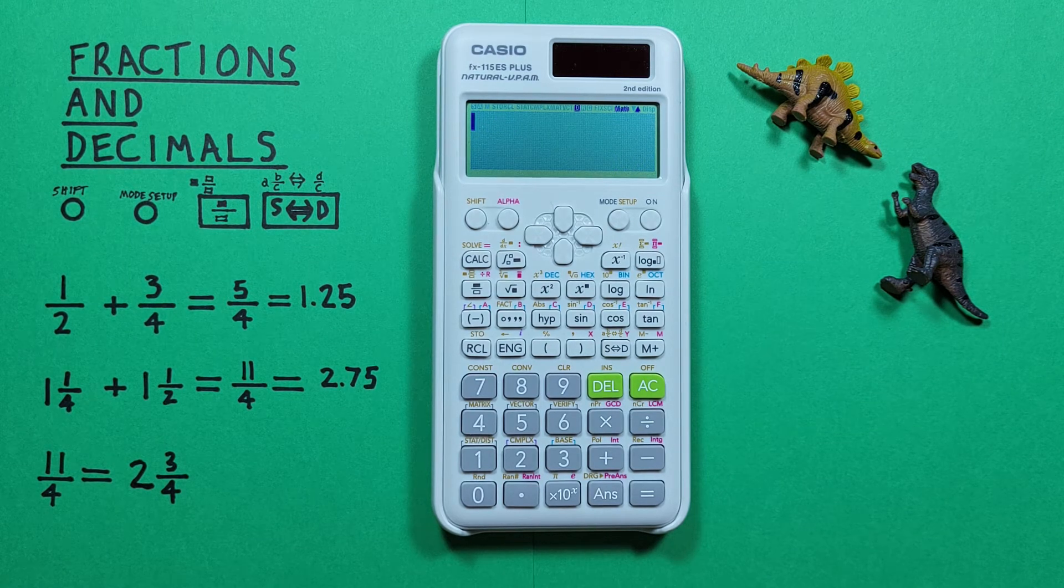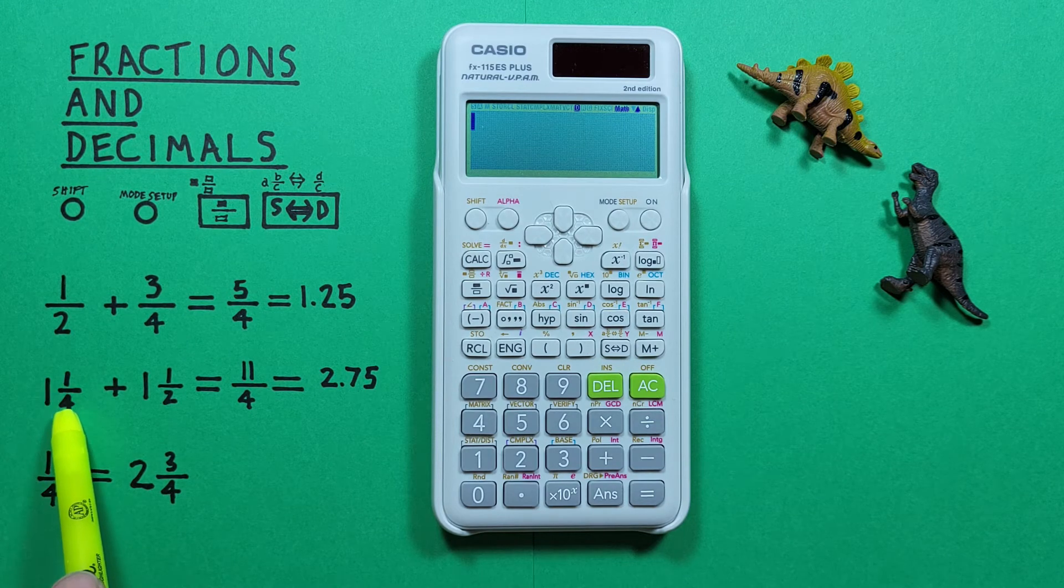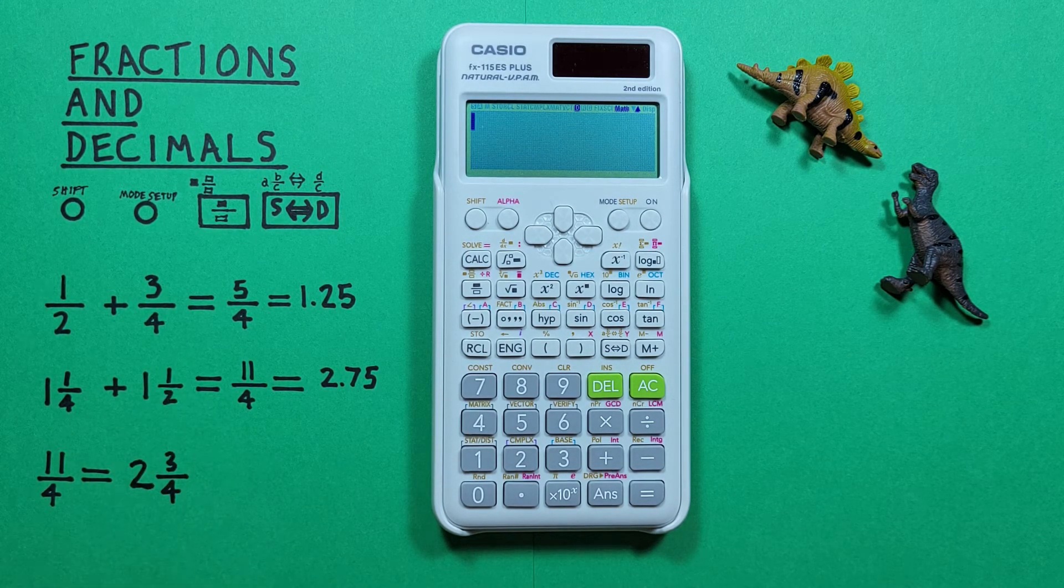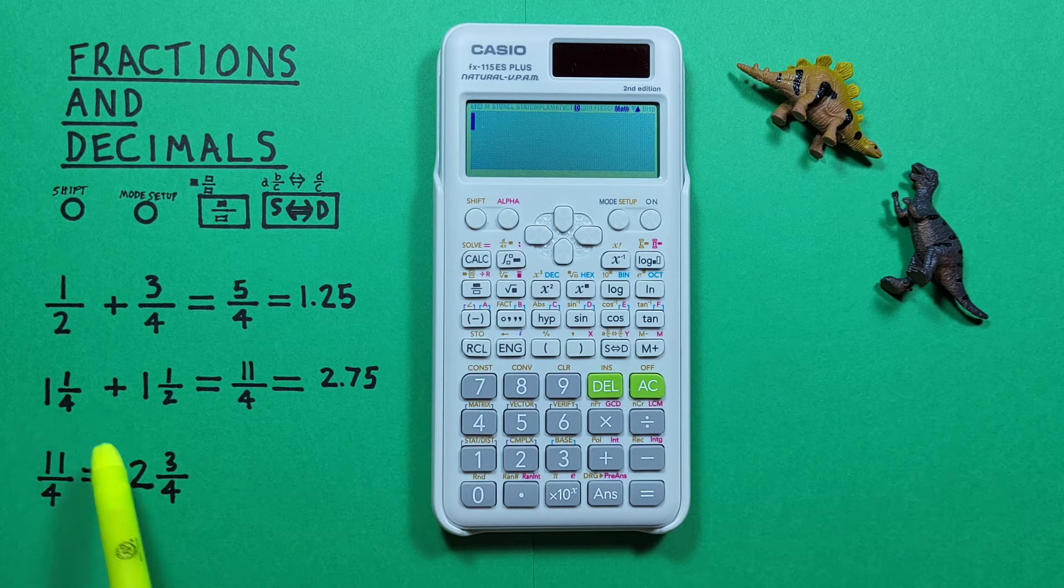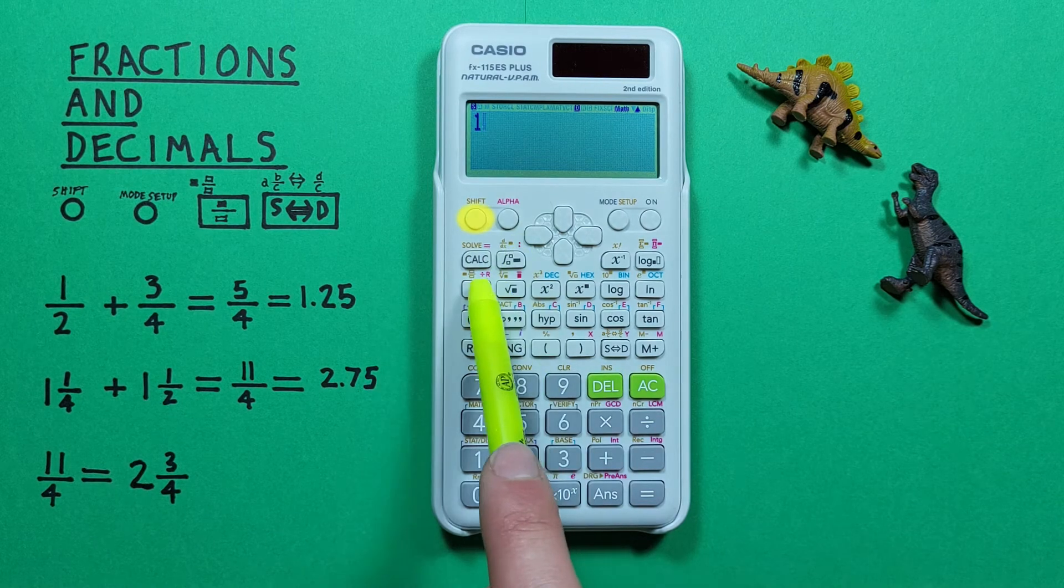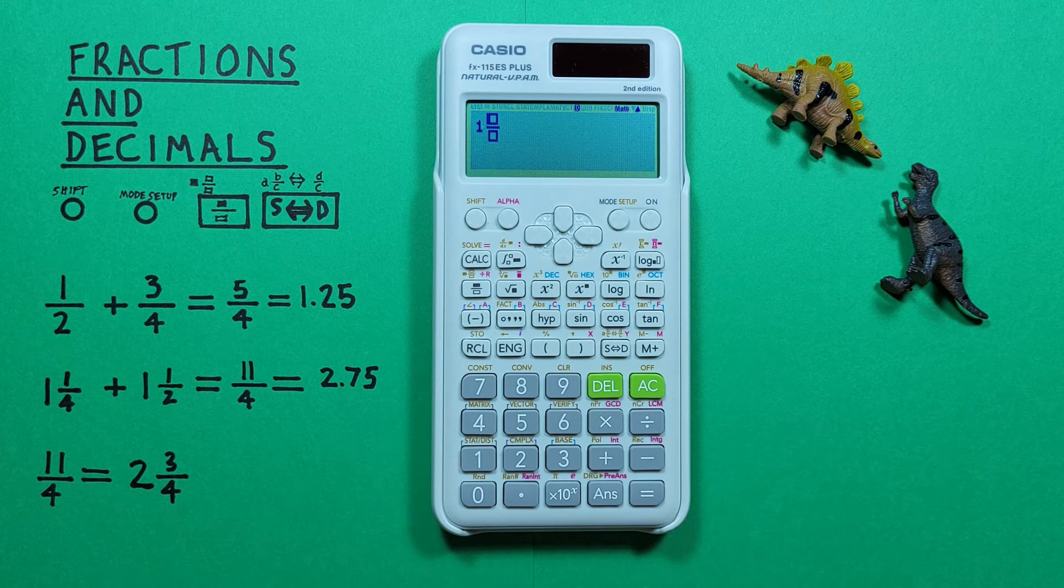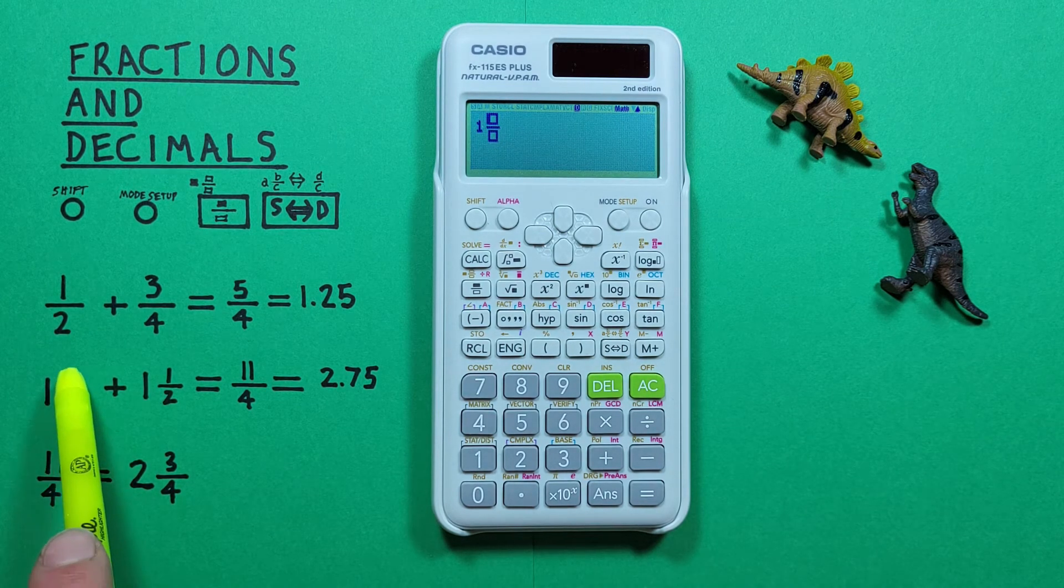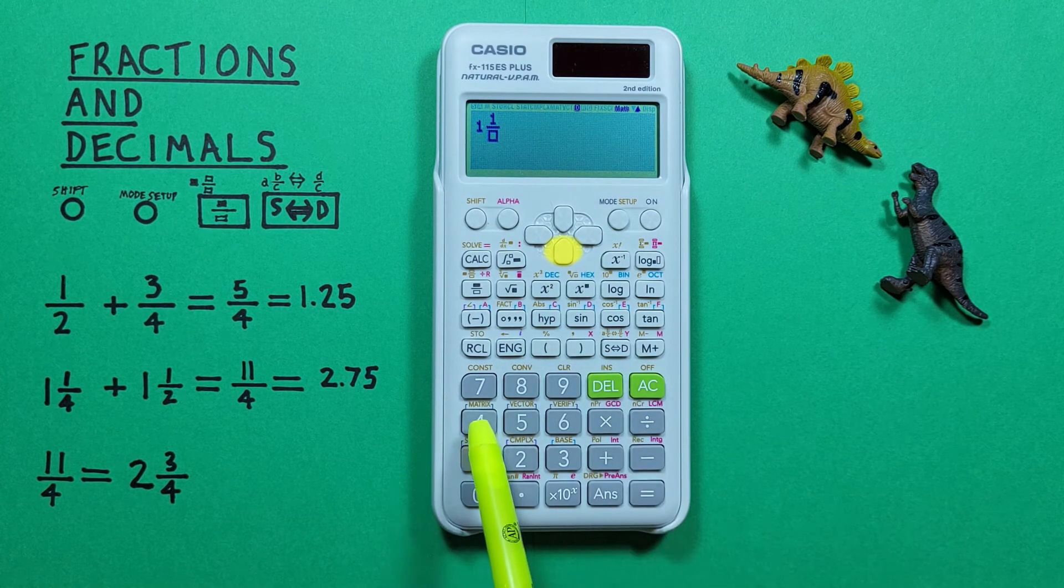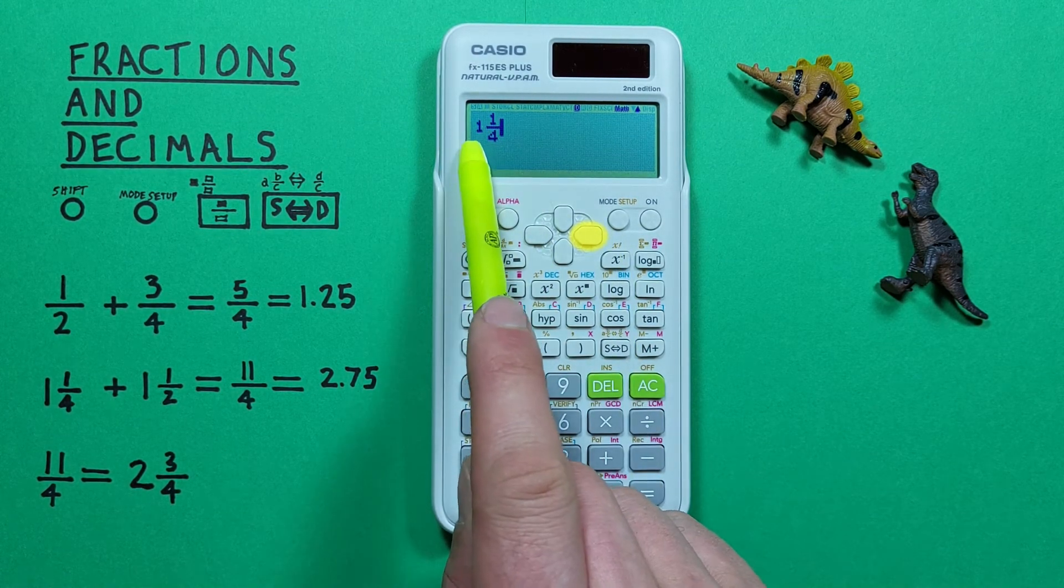We can also enter mixed fractions like this here: 1 and 1 over 4 plus 1 and 1 over 2. To do that, we start again with the 1. And then we press shift fraction key. And now we see we have the two boxes here that we can use. So for our first number it's 1 over 4. So we go 1, scroll down, 4, and to the right. There we go, 1 and 1 over 4.